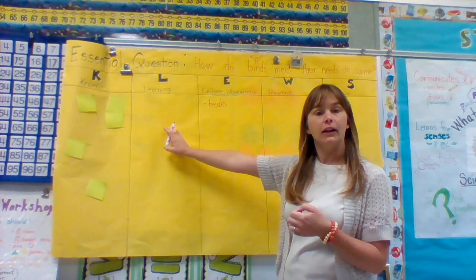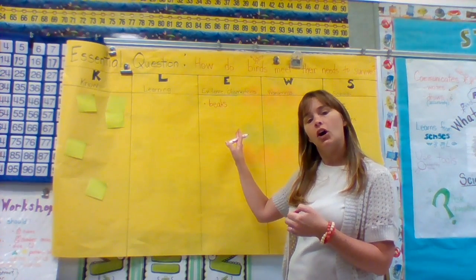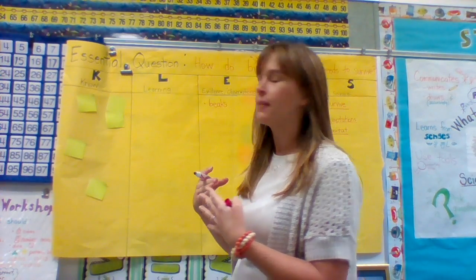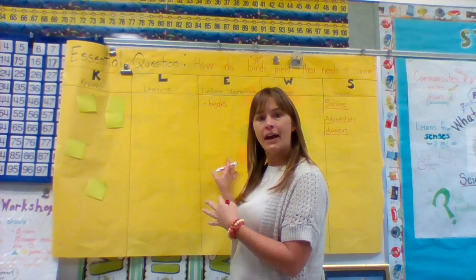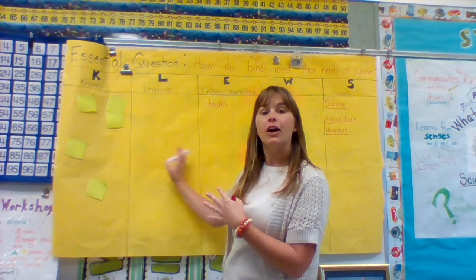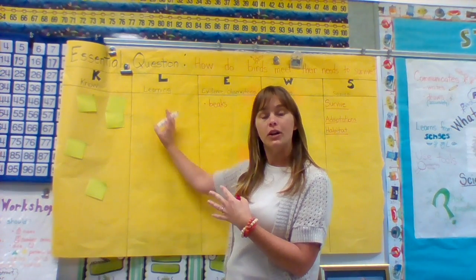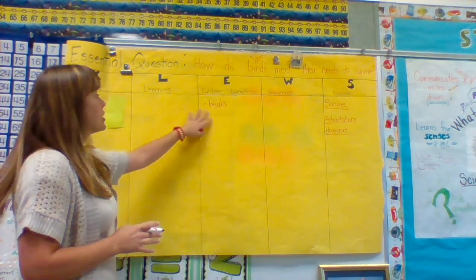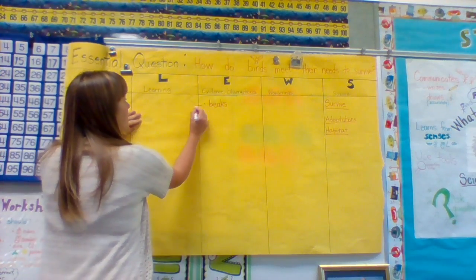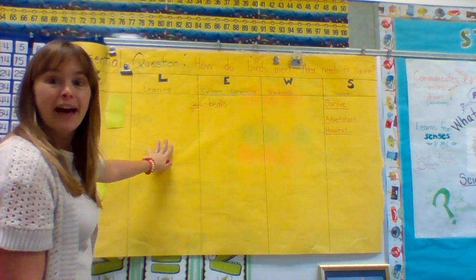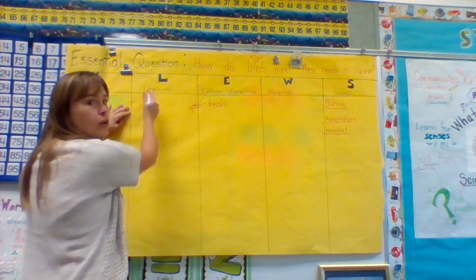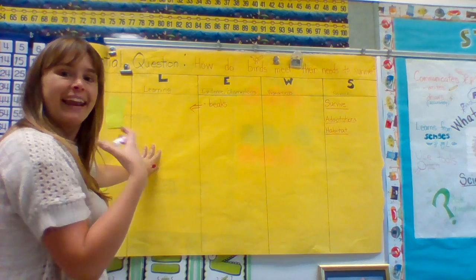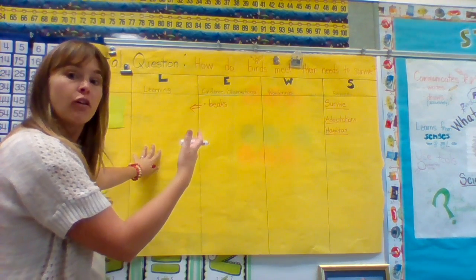Then we go to the L column. This is just like a CER — claims, evidence, reasoning — so it doesn't go in linear order, and most people draw an arrow to connect them. Based on the observations we have, we can now come to the content standard or the cross-cutting concept. Boys and girls, your observations have now shown us that all birds have common external features, so I would write that here in learning: all birds have common external features. And again, that goes back to the big understanding from the standards.